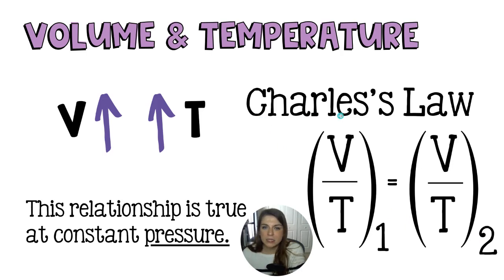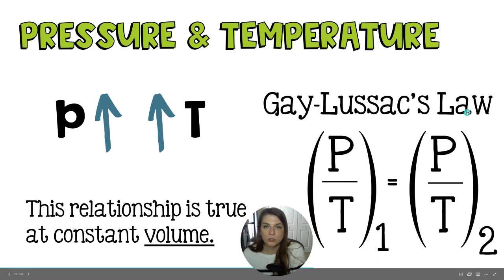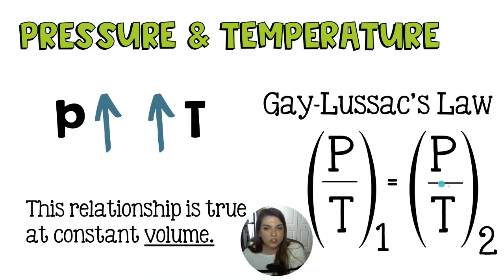That was discovered by a French scientist. Then we have Gay-Lussac's Law — I'm not sure if that's one person with a hyphenated name or two people. As the pressure of a gas increases, the temperature must also be increasing. Mathematically, the pressure divided by the temperature before equals the pressure divided by the temperature after. You can change either variable and cross-multiply to figure out what is going on.